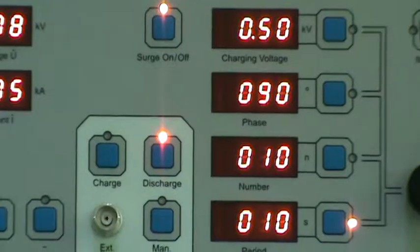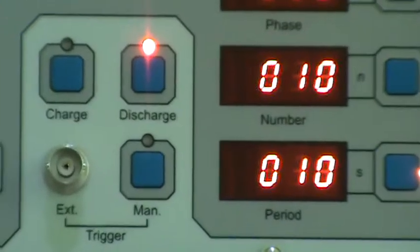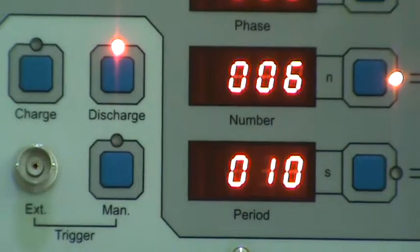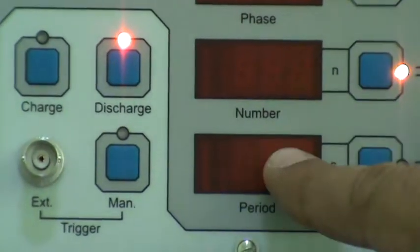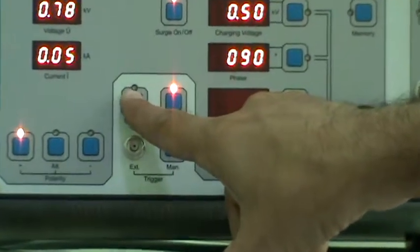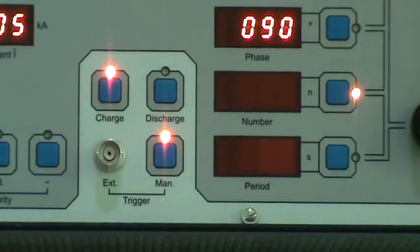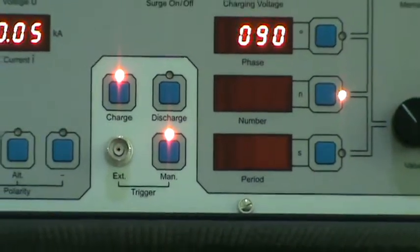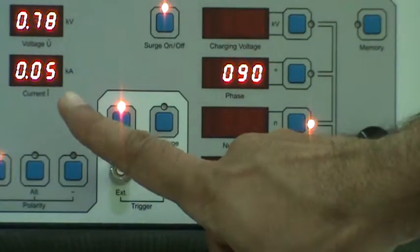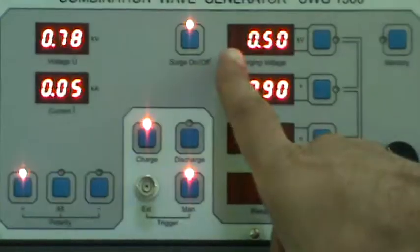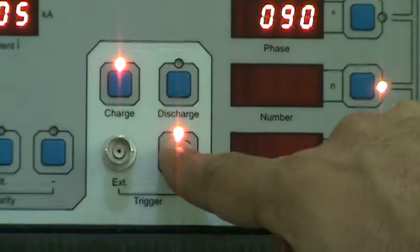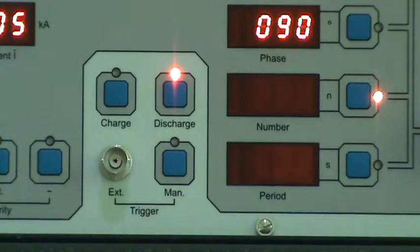For discharging single cells we need to press the number button and rotate this encoder to extreme left. Now we see these two displays are blank. Now press charge button. Only single surge has applied to the EUT. Now while pressing this main trigger, this coupling is charged with the 0.5 KV voltage. If we press this manual trigger, this will discharge the single surge. Now single surge has discharged to the EUT.